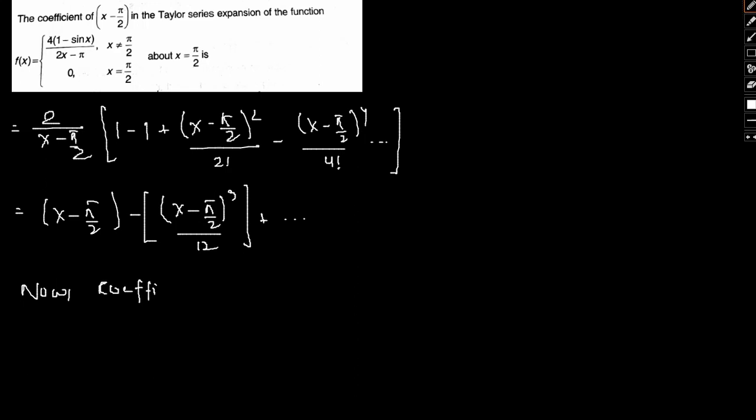This can be further simplified to (x - π/2) - (x - π/2)³/12 + ... and so on. Therefore, the coefficient of (x - π/2) is equal to 1.